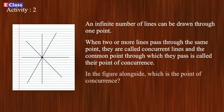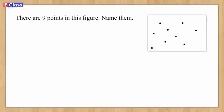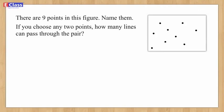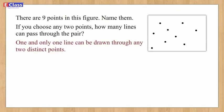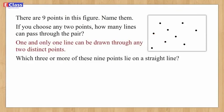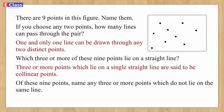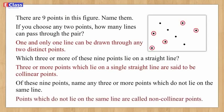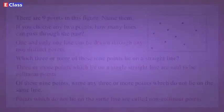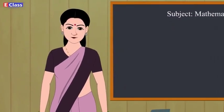In the figure, P is the point of concurrence. There are nine points in this figure — if you choose any two points, one and only one line can be drawn through them. Three or more points which lie on a single straight line are called collinear points. Points which do not lie on the same line are called non-collinear points.